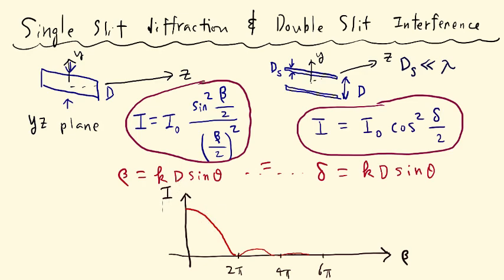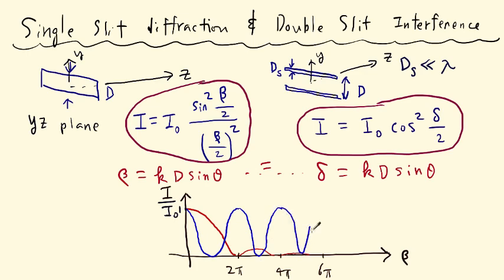Now let's plot the double slit in blue. In the case of double slit, when delta equals two pi times integers it's a maximum, so the central maximum agrees. But notice that at two pi you have another maximum as well. We're plotting cosine squared of beta over two, so the function goes up to maxima at each multiple of two pi, then down to zero between them. I'm plotting the positive beta part only since the negative part is a mirror reflection — these intensity functions are even functions of beta.